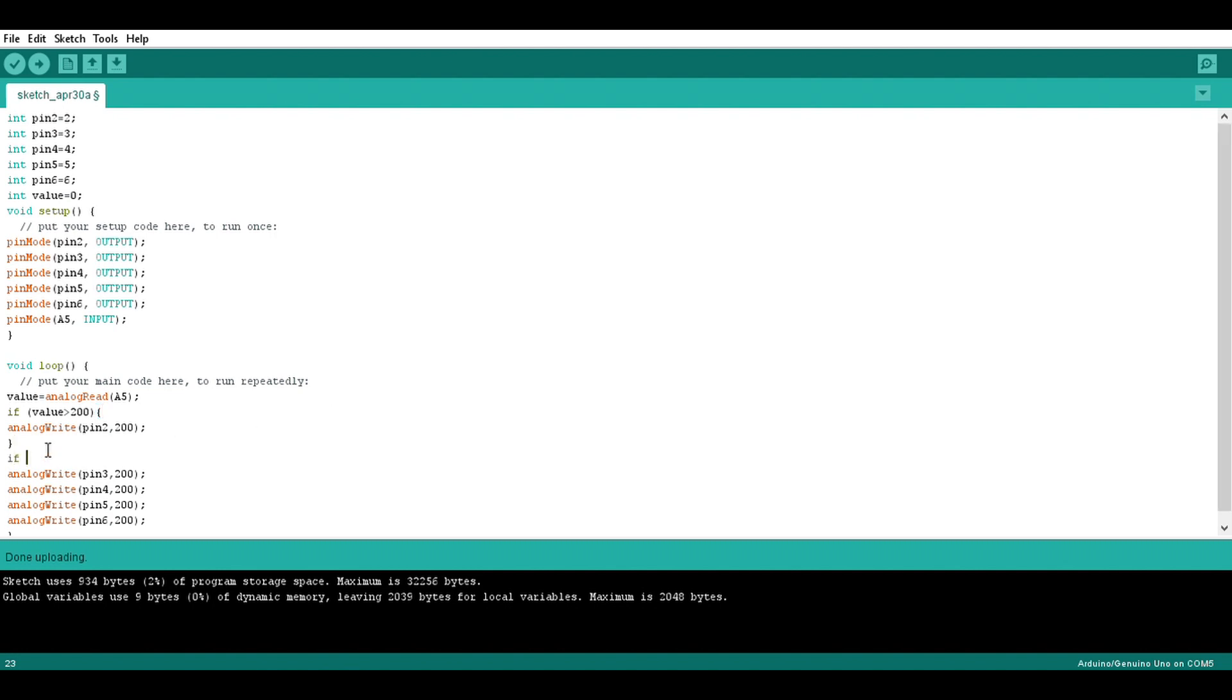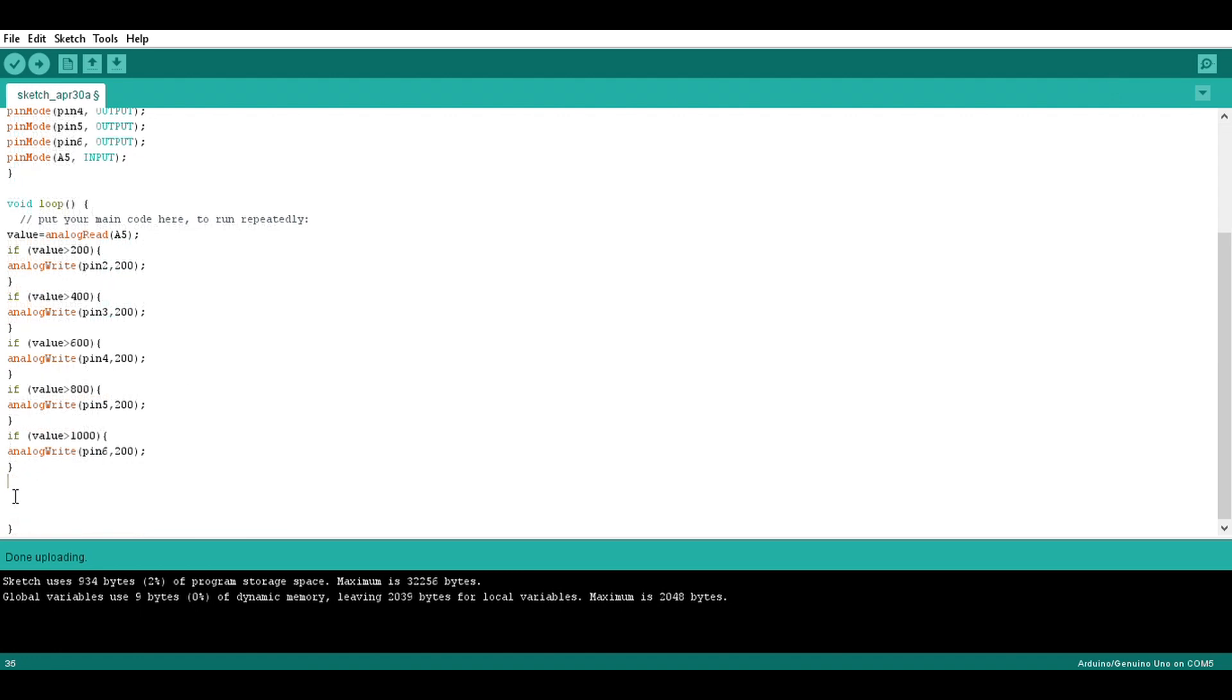If the value is above 400 we'll make the next pin go on and so on. And then at the end of the code I do a little bit of a delay and then I turn the pin back off.